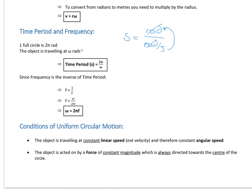To define what we mean by uniform circular motion: all of the motion you'll see in these topics at A-level will be uniform circular motion. That means the object is travelling at constant linear speed — not constant velocity, because the direction is constantly changing as it goes around the circle, but it is constant speed. Therefore it has constant angular speed omega. Also, to be in uniform circular motion it's acted on by a force of constant magnitude that is always directed towards the centre.